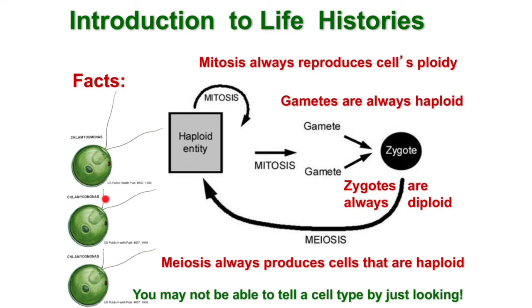When two such genetically different organisms fuse together, they would form a zygote, and the zygote is going to be diploid. The zygote would then produce more gametes — four gametes. Each of them would be genetically different, because this is what happens during meiosis. The result of meiosis of the zygote would be four different unicellular organisms, and they are going to be haploid.